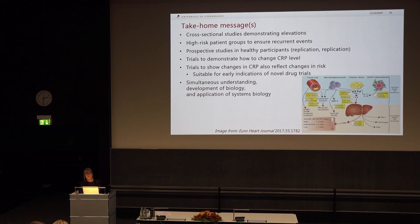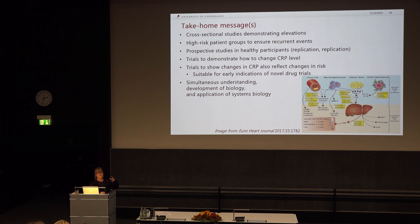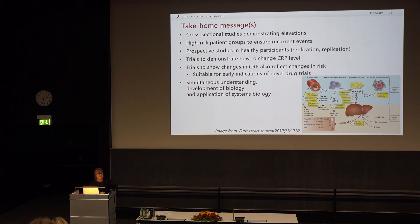As an epidemiologist, what are the take-home messages from this example? A lot of the studies presented today are cross-sectional studies demonstrating elevations in patient samples. We can also look at high-risk patient groups where we're sure to have enough recurrent events for statistical power — this creates an early success and is safer before we move into truly prospective studies of healthy participants looking at disease risk, where replication and large patient numbers become essential as we take it to the population level.